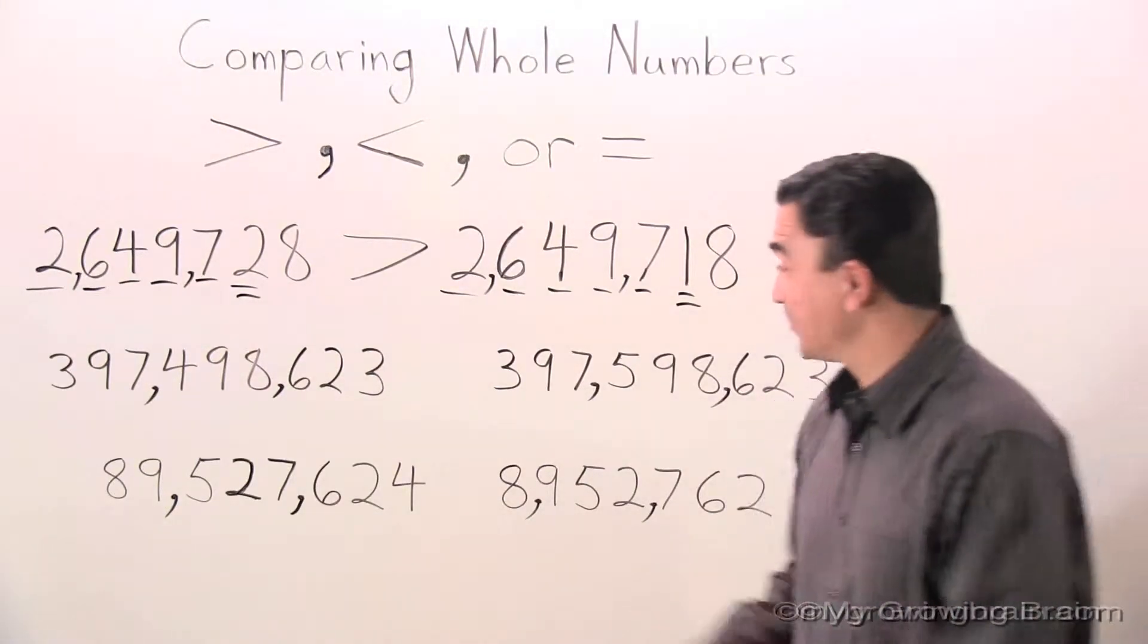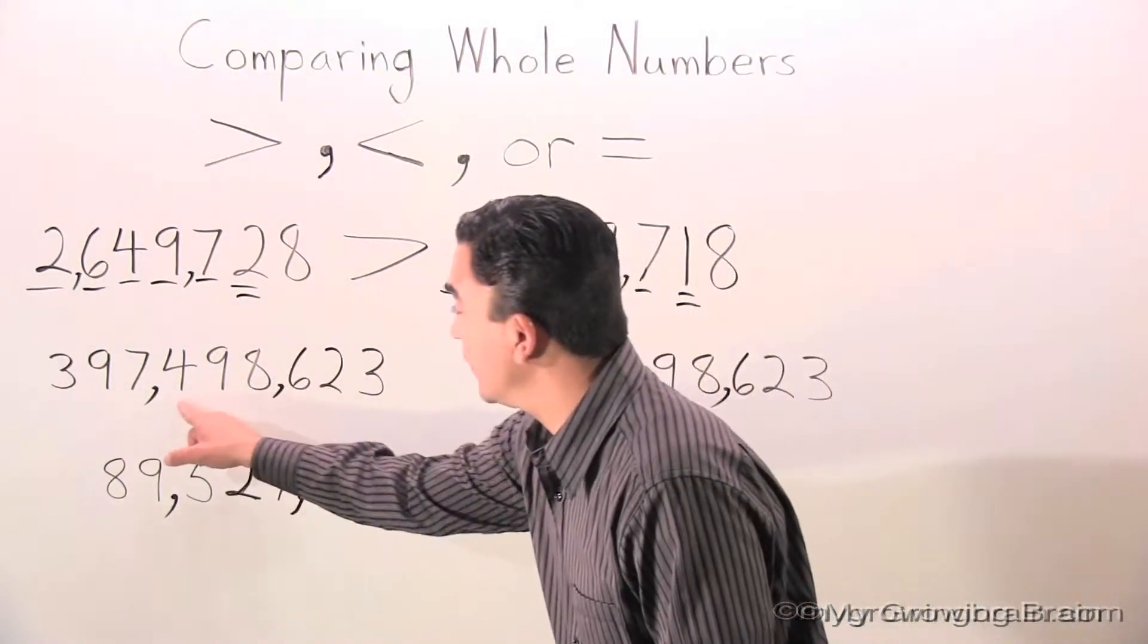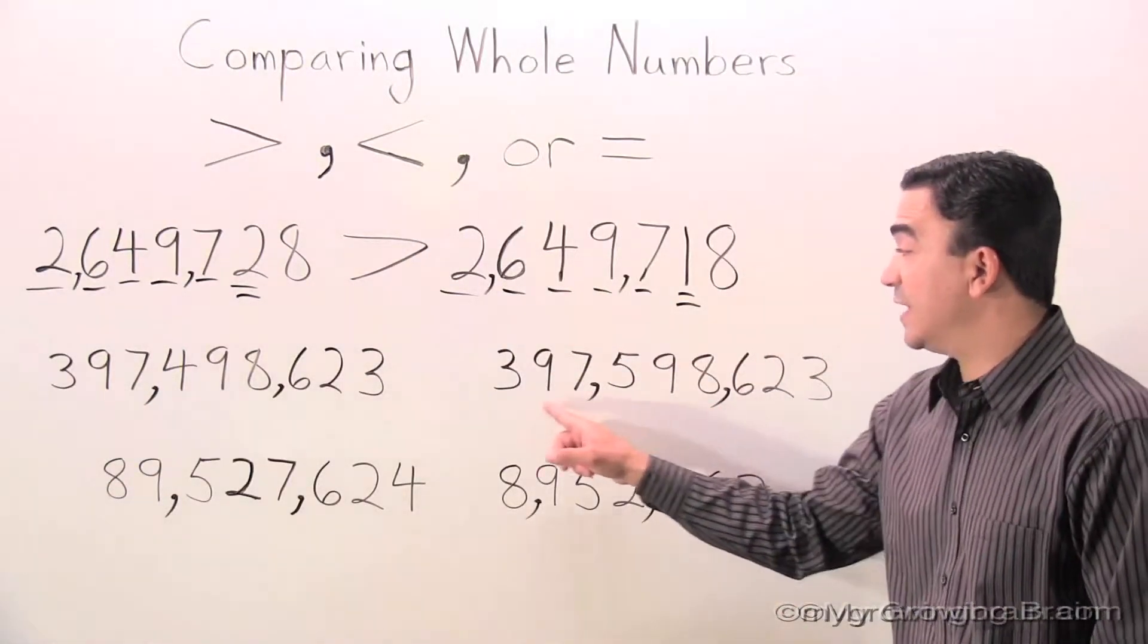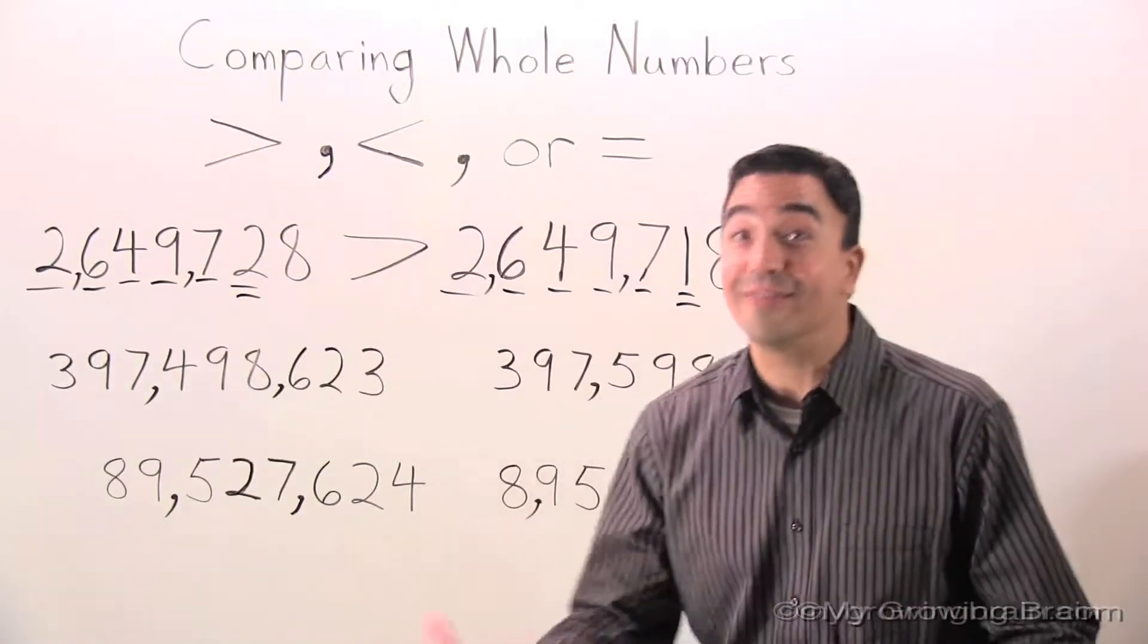Let's count the digits. 1, 2, 3, 4, 5, 6, 7, 8, 9. 1, 2, 3, 4, 5, 6, 7, 8, 9. It's the same.